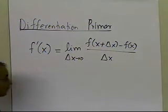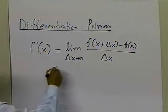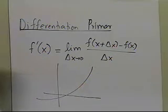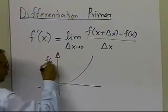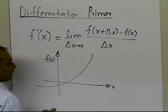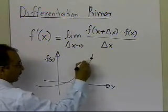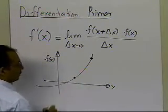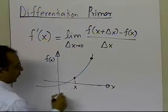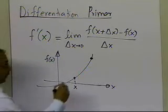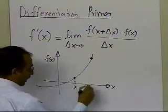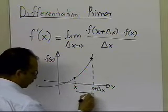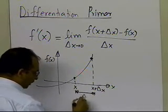So that was the definition of the derivative of a function, which, from a graphical standpoint of view, means that if you had a function like this — f of x as a function of x — and you want to find out what the derivative of the function is at some point x, what you are going to do is choose a point which is delta x ahead of that point, so the distance between the two points is delta x.